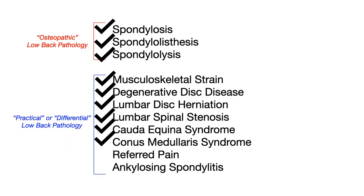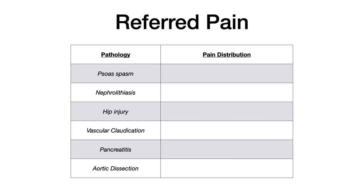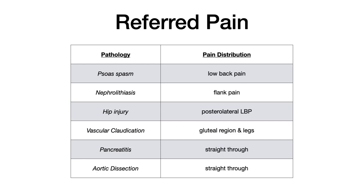The next part covers referred pain — not all low back pain is organically due to a low back etiology. A psoas spasm causes midline general low back pain. Nephrolithiasis presents with flank pain in the back. Hip injuries cause posterolateral low back pain. Vascular claudication involves the gluteal region and legs. Both pancreatitis and aortic dissection feature back pain that goes straight through — meaning the pancreas or aorta, not the low back itself, may be the etiology.